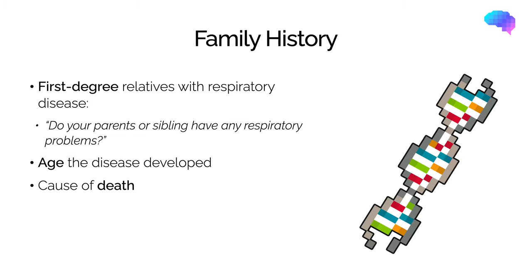In your family history, you should ask whether the patient has had any first-degree relatives with respiratory disease, including the age at which the disease developed and cause of death if applicable. Some respiratory conditions such as cystic fibrosis are inherited — for example, cystic fibrosis is inherited in an autosomal recessive manner — so family history is really important here.